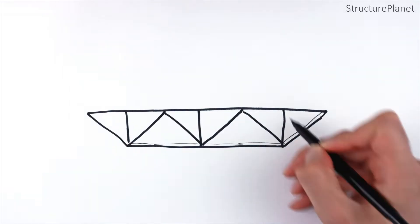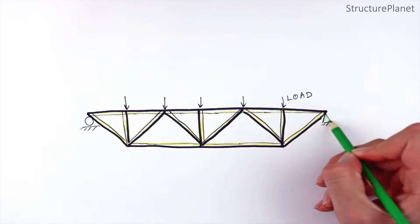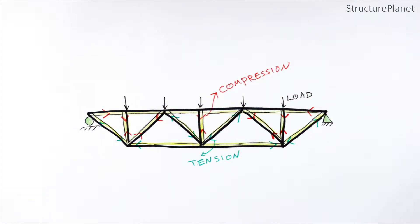Trusses rely on the concept that members work under axial forces and no bending is transferred between the end joints. This simplifies the design and construction process.